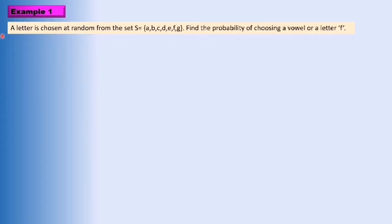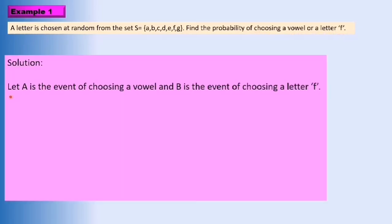Example 1. A letter is chosen at random from the set S equals {A, B, C, D, E, F, G}. Find the probability of choosing a vowel or a letter F. Let A be the event of choosing a vowel and B be the event of choosing a letter F. We have set A equals {A, E} and set B equals {F}.